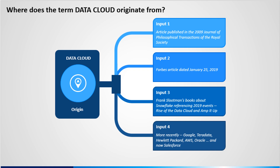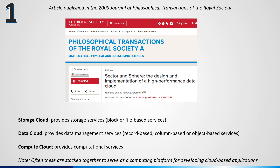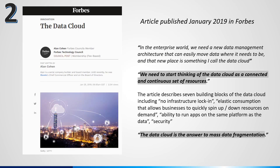I think it would be helpful to first take a look at where the term data cloud comes from. I traced the term data cloud to four different origins. A 2009 journal article defined the term data cloud as something which provides data management services — either record-based, column-based, or object-based. Not much of a definition, but it was the first time I found the term being used. The most relevant description of a data cloud comes from Alan Cohen a decade later. In his 2019 Forbes article titled 'The Data Cloud,' Alan described the reasons why we need a data cloud to solve the problem of mass data fragmentation. He went on to describe seven building blocks of the data cloud. If you ask me, Alan deserves credit for coming up with the term and modern definition of the data cloud.